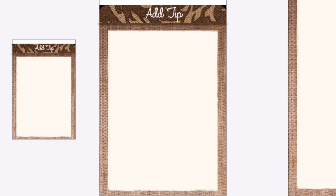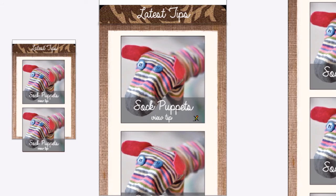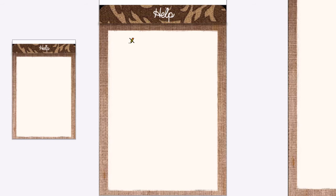My Tips will be like the Latest Tips screen, but showing the tips you have uploaded. I haven't designed that because it's going to be pretty much the same. Help is just a help screen with some simple help tips. A lot of the time I load a help screen in a web view — I know it's lazy — but I think what we'll do is just add some text, maybe links to Twitter, Facebook, and an email link.